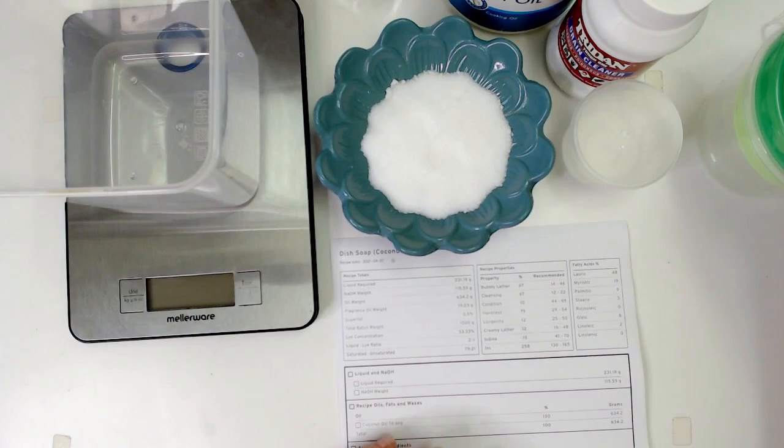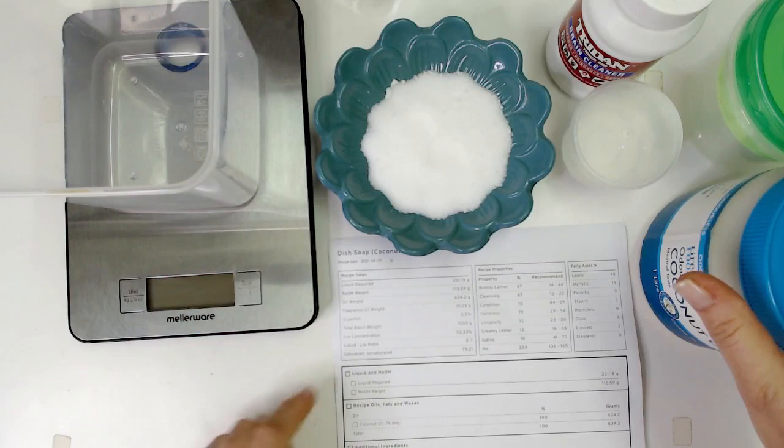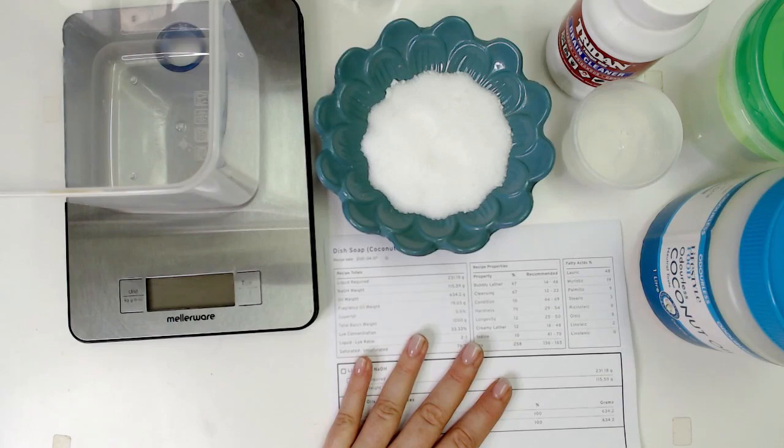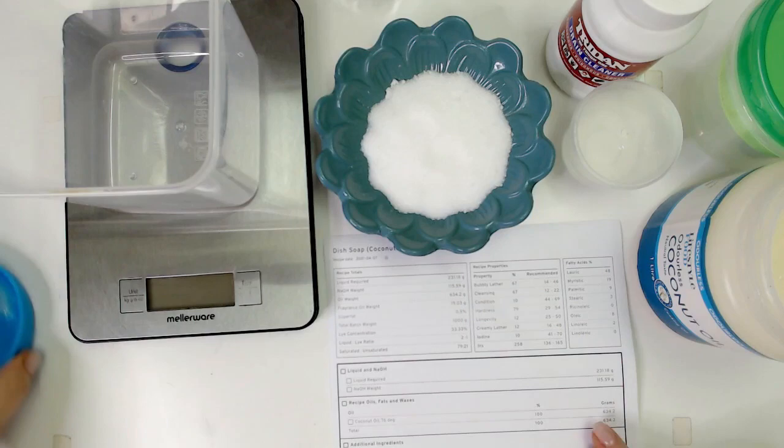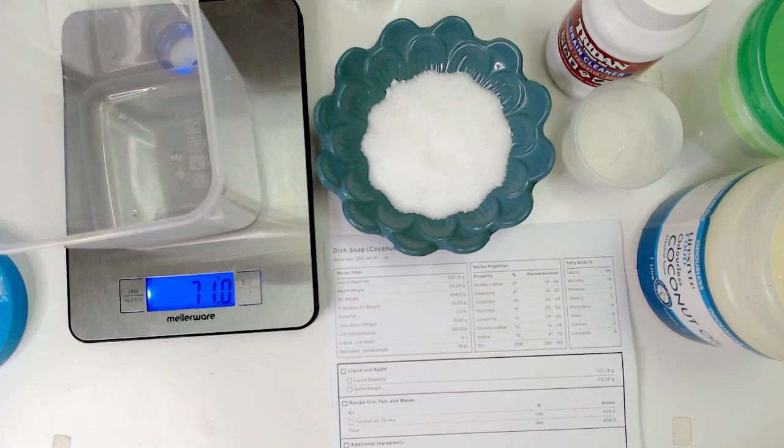I've got my 100% coconut oil. Now because this is going to be a dish soap I made the super fat only 1%. Most people will do 0% super fat for this. I like to have a little bit of a buffer zone that I know it's not going to end up lye heavy. So the amount of oil that I need to use here is 634 grams. I'm just going to switch on my scale, tare it, and we're going to go 634.